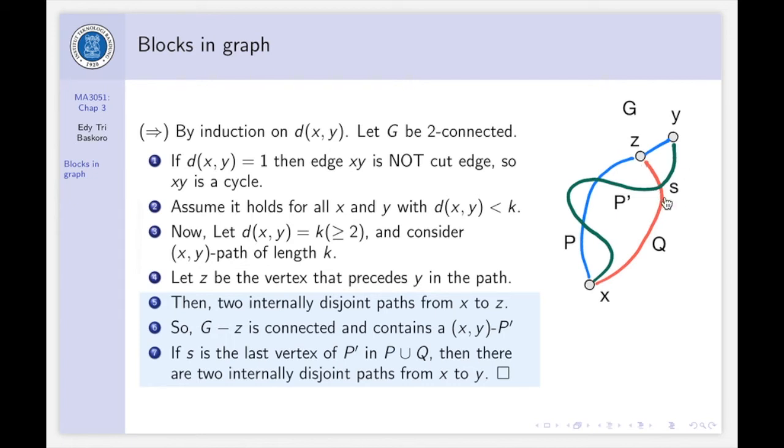So, and then if S is the last vertex of P prime, which is in union of P and Q, then there are two internally disjoint paths from X to Y now. Which one? Okay, I'll show you. So, the first one will be, this is the path from X to Y. So, we follow the blue one here. This is the first path, and then this one, the second path. So, it's proof that if G is too connected, then there are at least two internally disjoint paths between any two vertices in G.